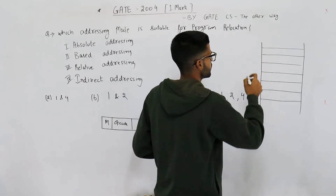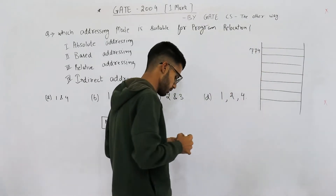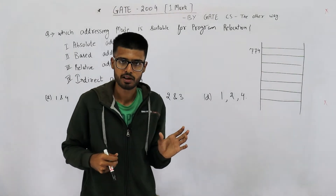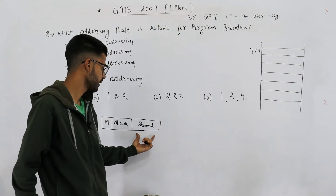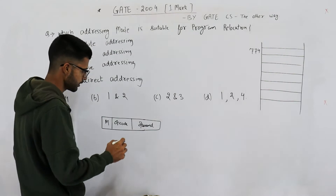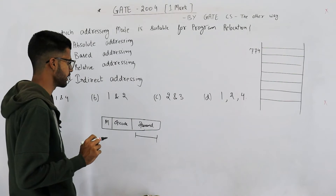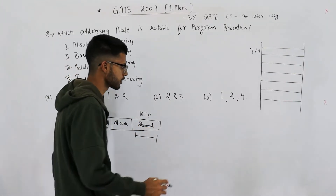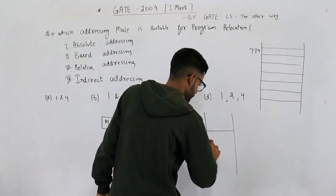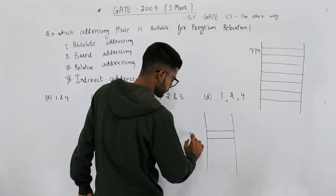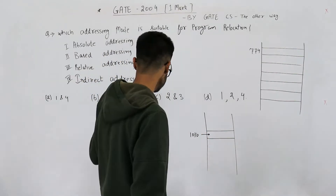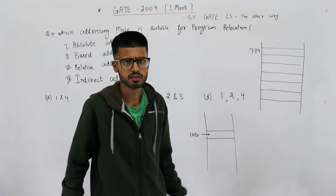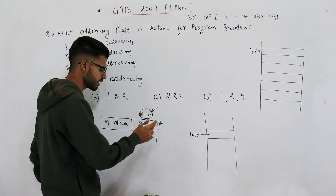Say the new address where it gets relocated is 774 — this is program relocation. Now the first option is absolute addressing mode. In absolute addressing mode, the operand field of our instruction contains the address of the operand — these bits are the memory address of the operand. This is kind of like hard-coding the target address, and irrespective of where our program gets loaded into RAM, this won't change.